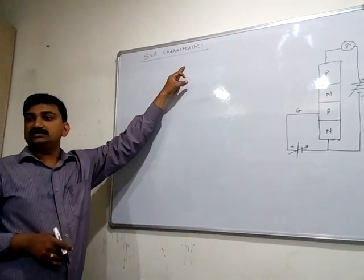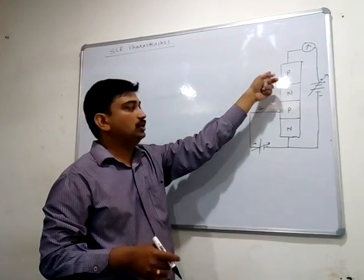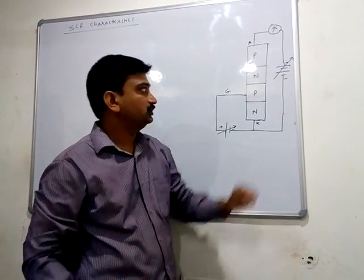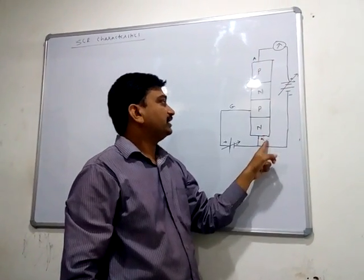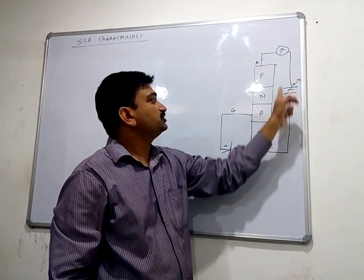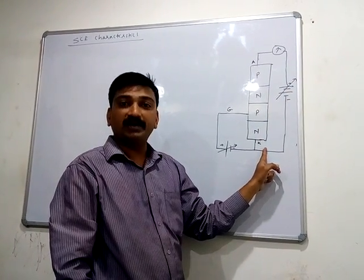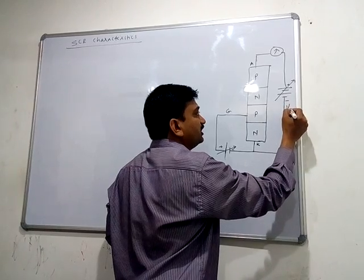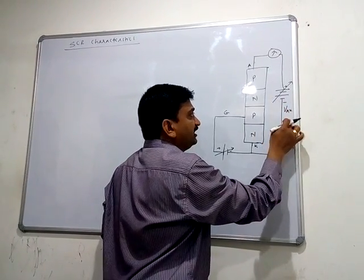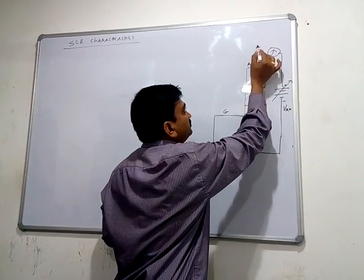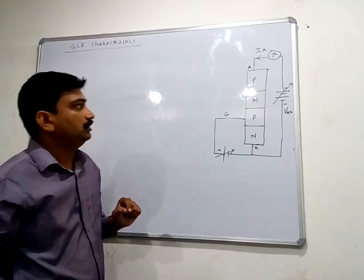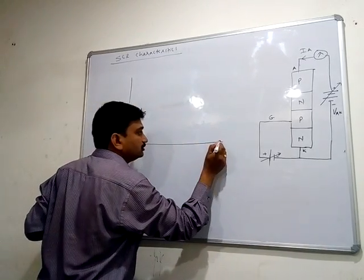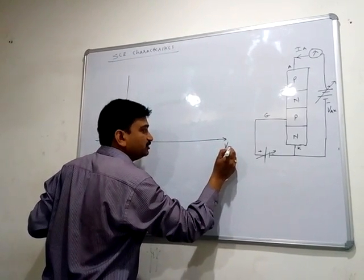In this lecture we will see the SCR characteristics. SCR is a Silicon Controlled Rectifier which has three terminals: anode, cathode, and gate. Between anode and cathode a power supply is given — anode positive and cathode connected to negative, meaning it is in forward bias. We will vary the supply voltage VAK between the anode and cathode and observe the anode current.